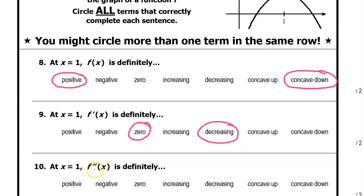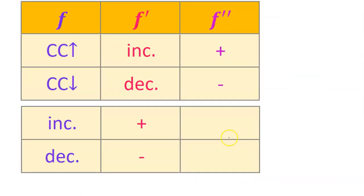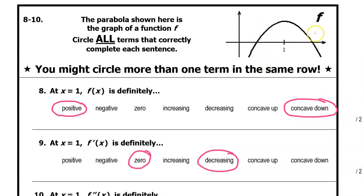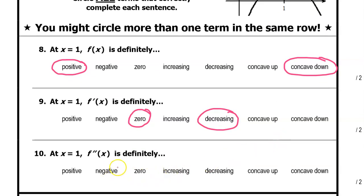Number 10: at x equals 1, f double prime is definitely what? Let's look at the chart. The relationship is: if f is concave up, f double prime is positive; if f is concave down, f double prime is negative. That's really all we know about f double prime. Since f is concave down, that means f double prime is negative. And that's all we know.